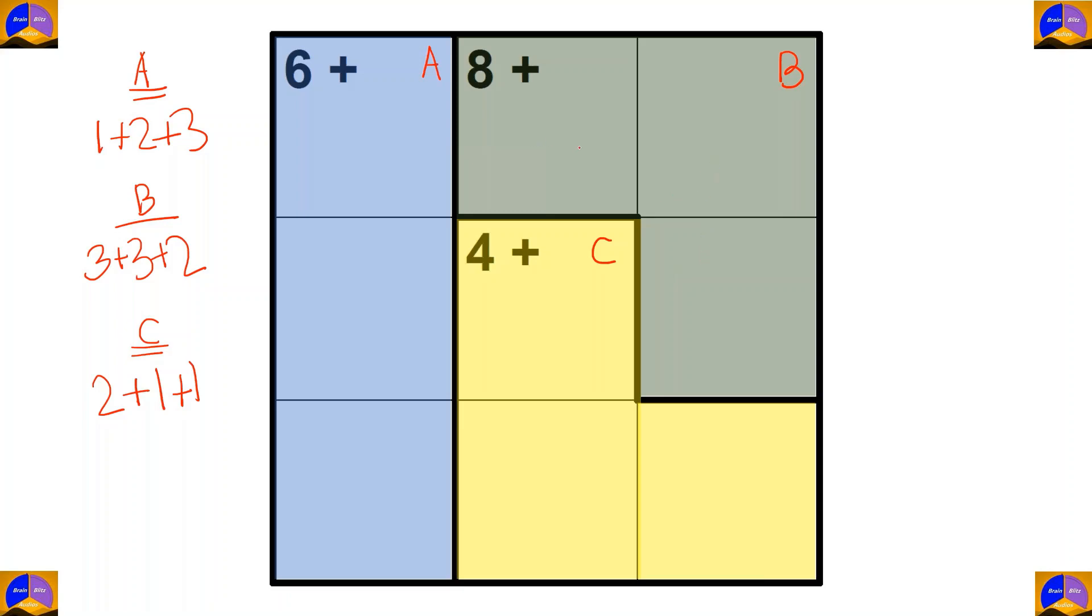So, the only option is to write 3 over here, 3 over here, and 2 over here. Same case for cage C, we will write 2 over here, 1 over here, and 1 over here.